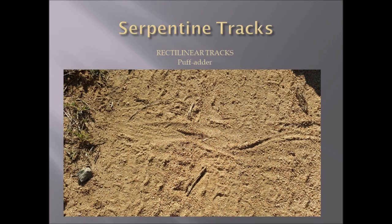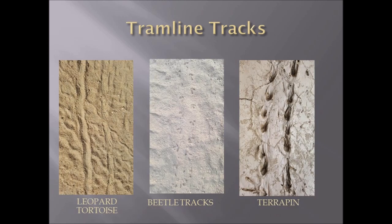Here we have a rectilinear track of a puff adder, and you can see the tail drag of the animal. It has sometimes been said that this is characteristic of females, which are said to have a longer tail, but the jury's out on that.